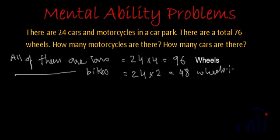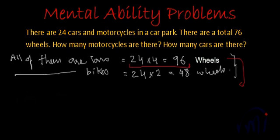So all of them are neither cars nor bikes — there is a mix of both. Now let's solve it, starting from the first case where we assume all of them are cars. If all of them are cars, there should be 96 wheels.